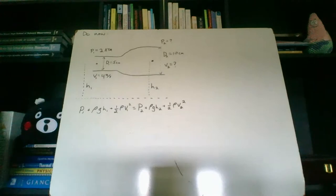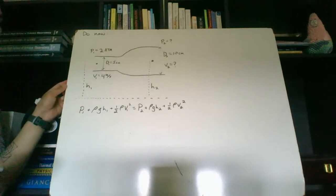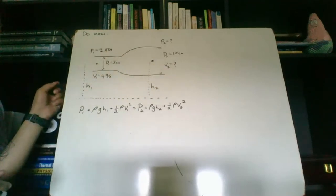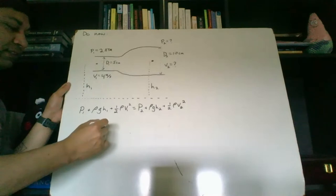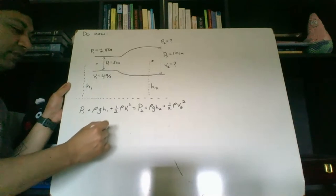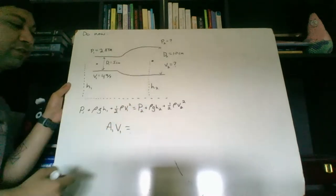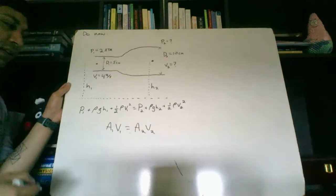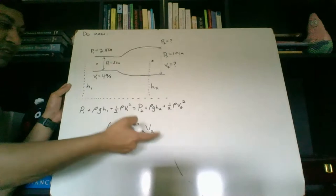How do we figure out what the velocity is, and how do we figure out what the pressure is? The velocity term is probably the easier one to solve for because the fluid flow rate has to remain constant. The equation for the fluid flow rate is the cross-sectional area A1 times V1, and that's going to equal the fluid flow rate on the other side, which is A2 times V2.